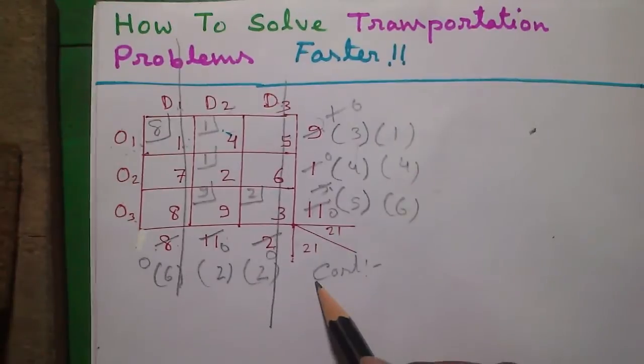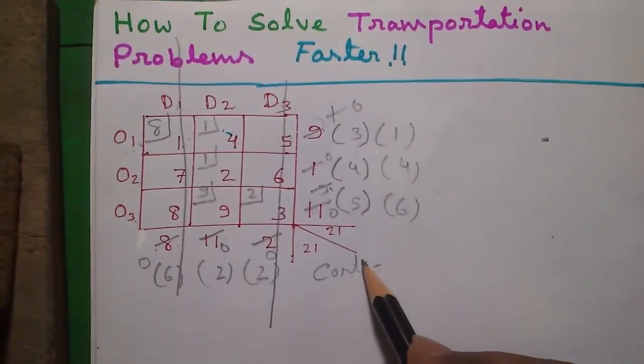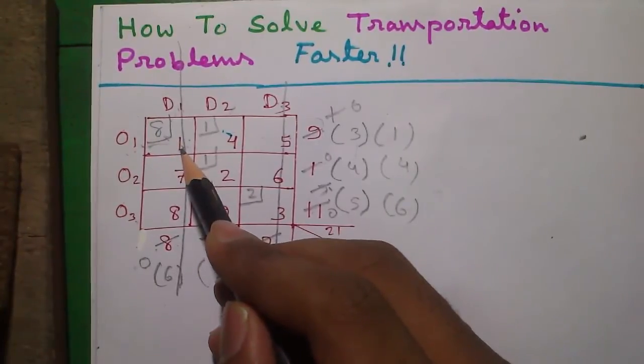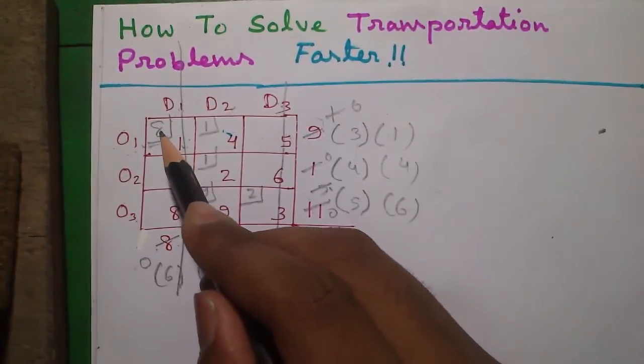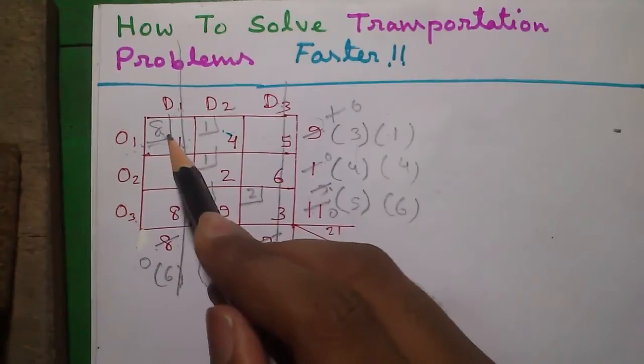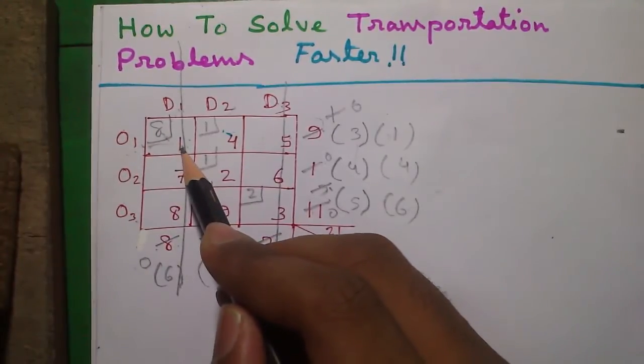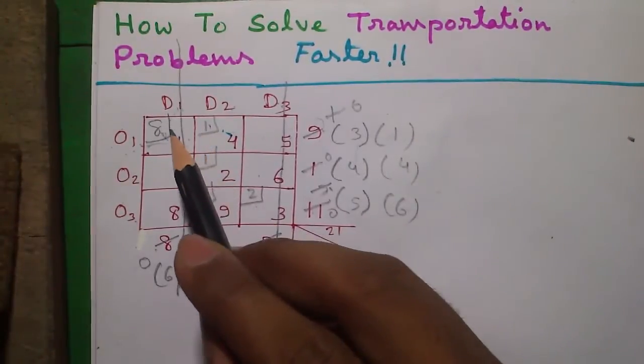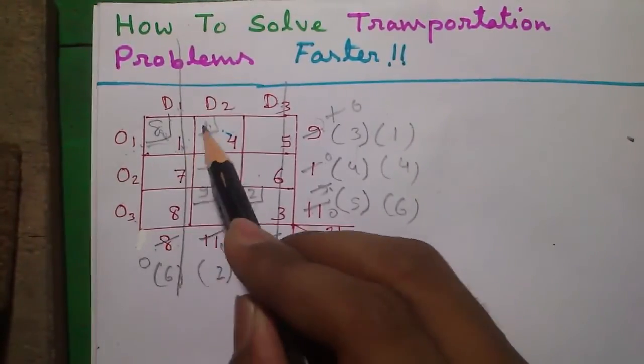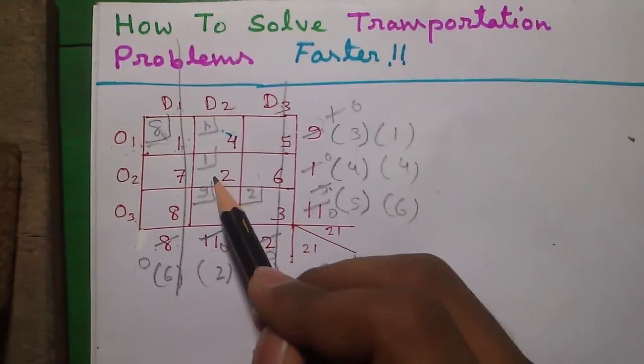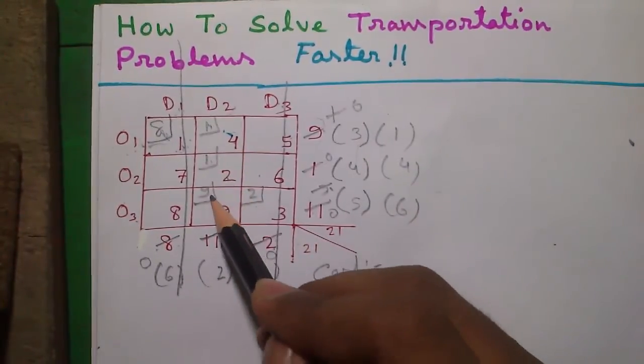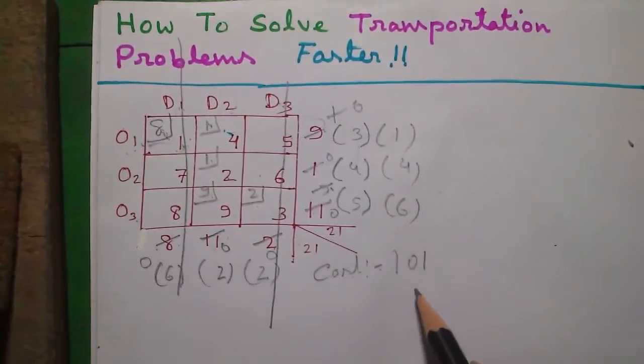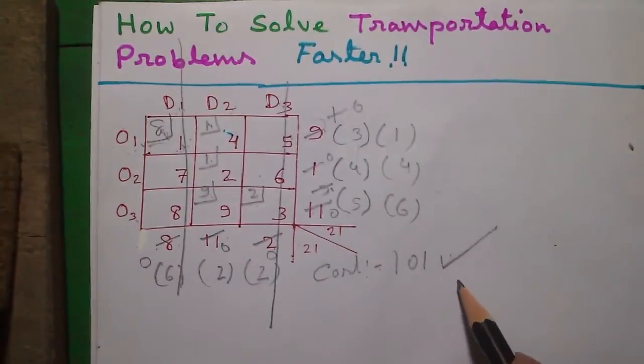So we'll find out our total allocation cost. That means we have allocated 8 units of goods with a cost of 1 per unit. So for this cell the allocation cost becomes 8 into 1 that is 8. So we'll add all this allocation cost to get our total allocation cost. Total allocation cost will become 8 into 1 is 8, plus 4, plus 2, plus 81, plus 6, that equals 101. This is our final answer.